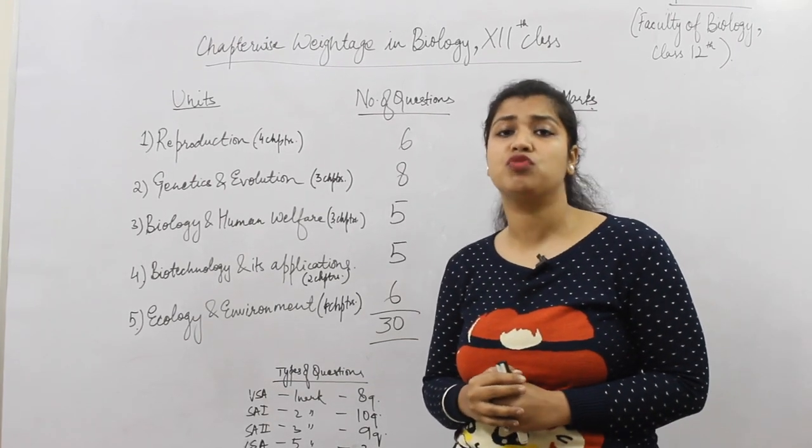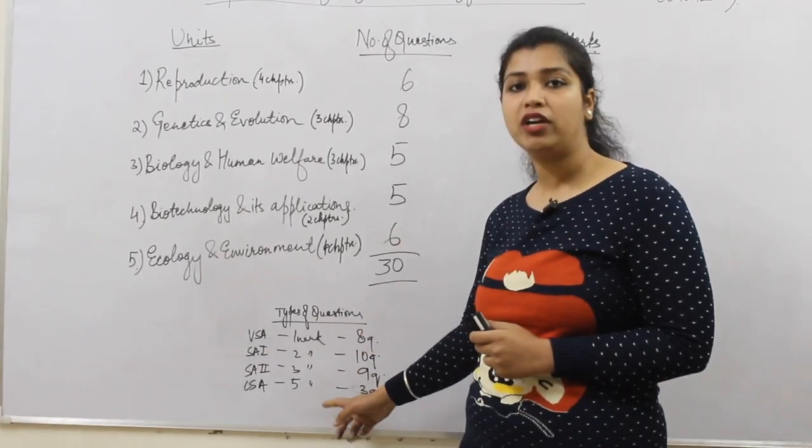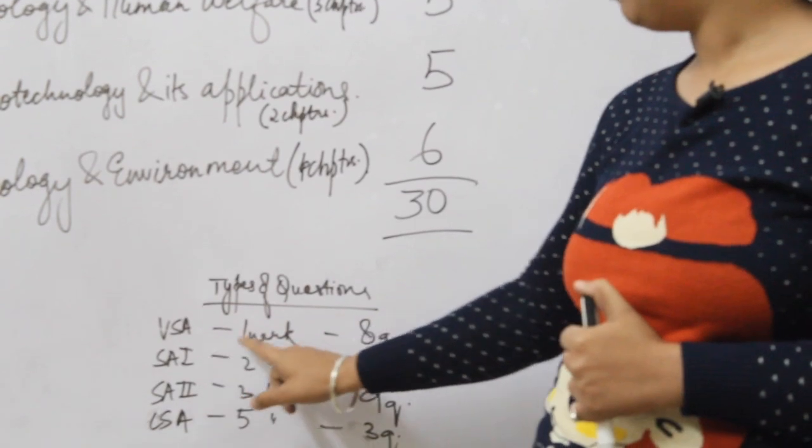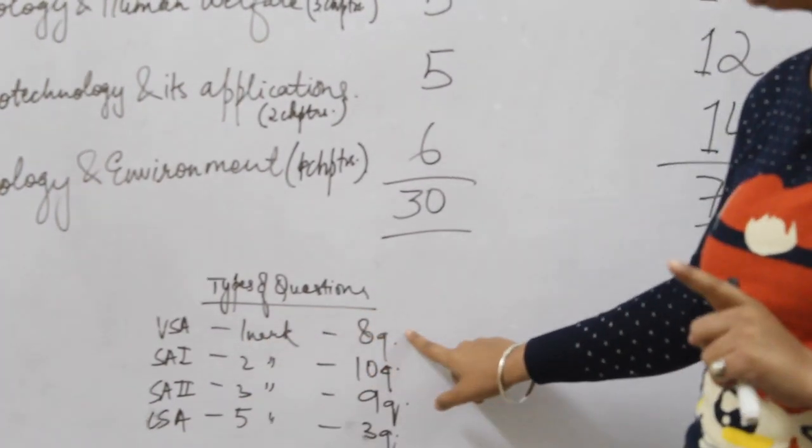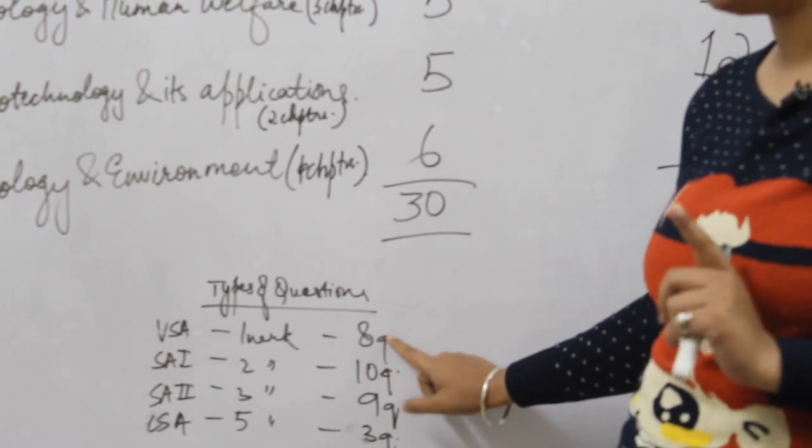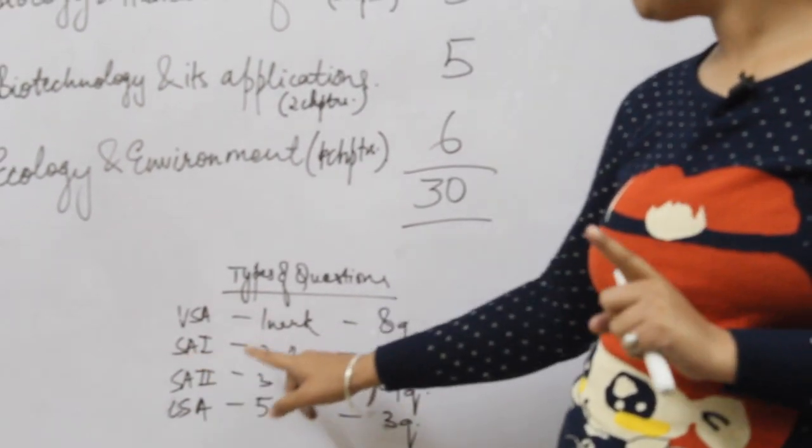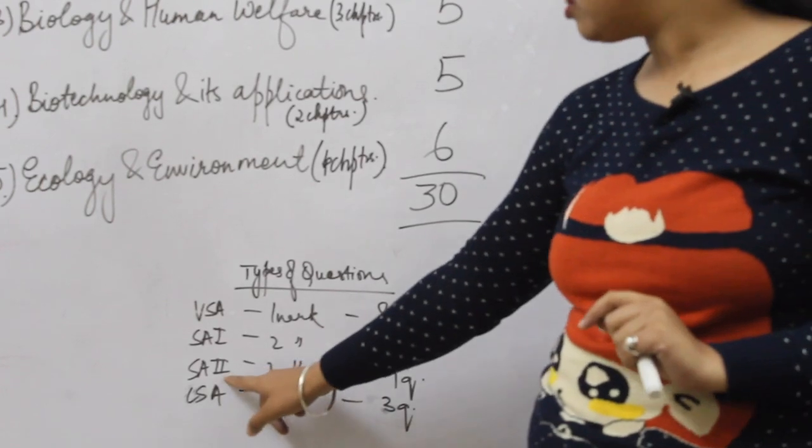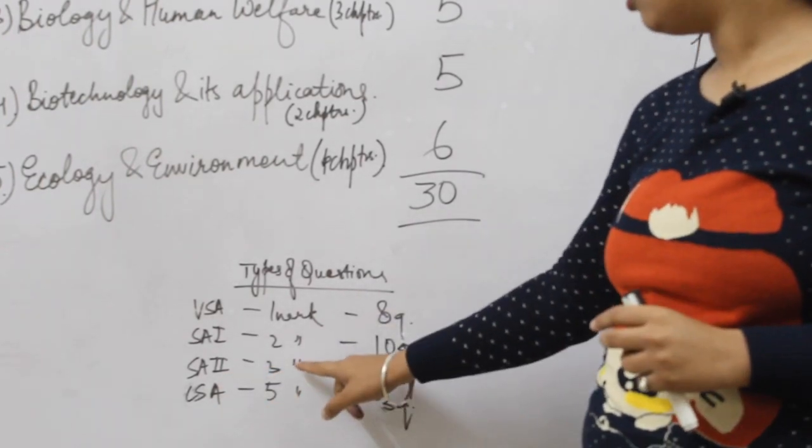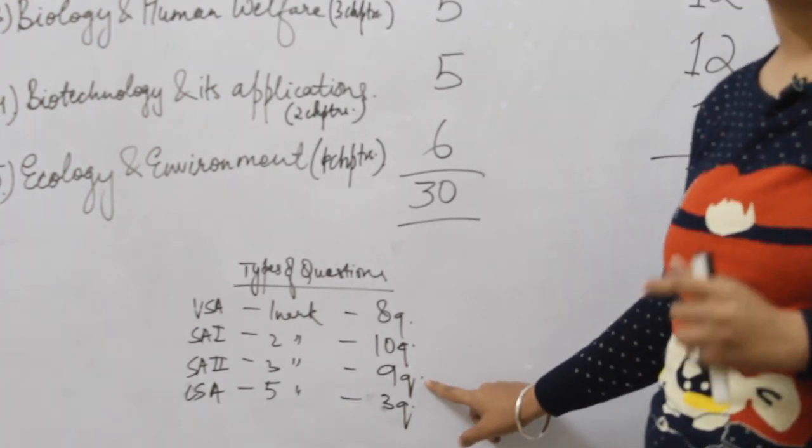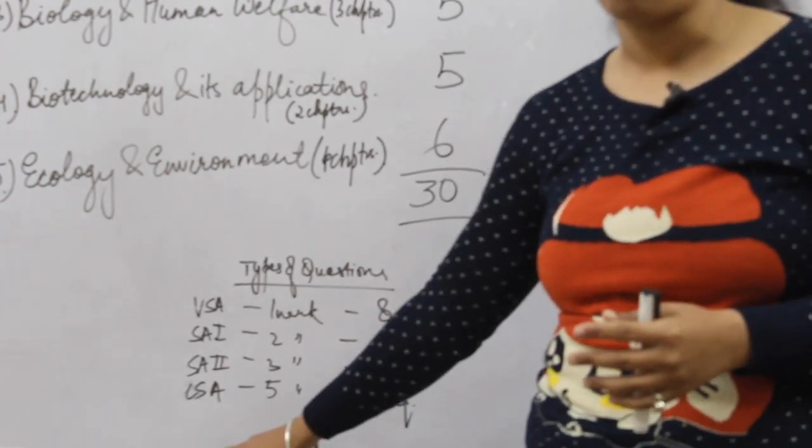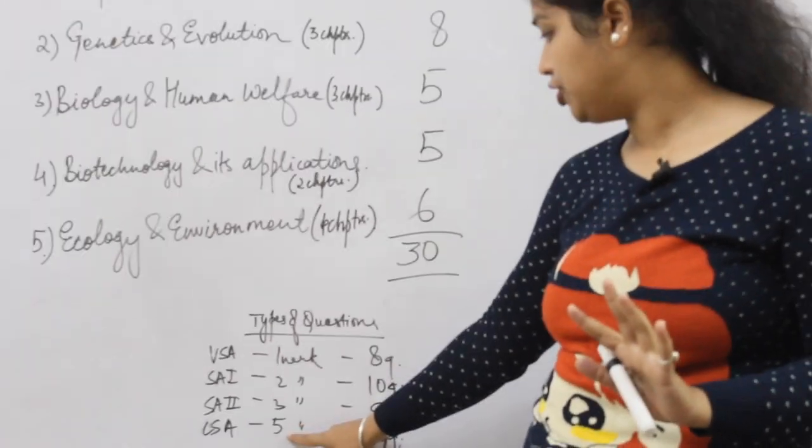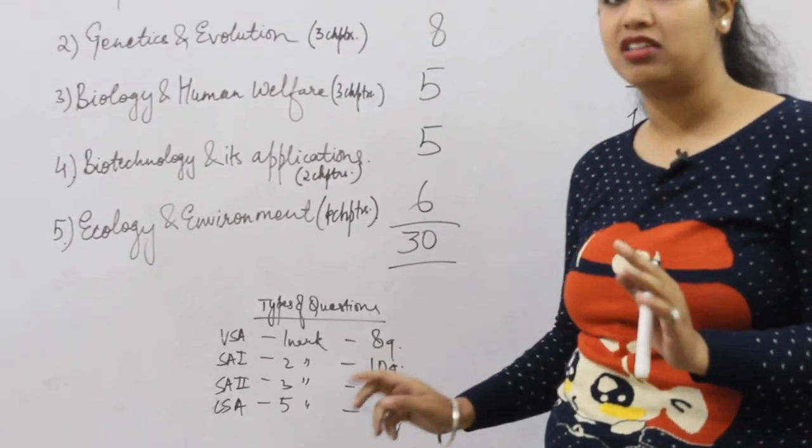If I talk about types of questions which will be asked in the paper, there are basically four types. Very short answer questions of one mark each, eight questions in total. Short answer type one, two marks each, ten questions. Short answer type two, three marks each, nine questions. And long answer type questions, five marks each, three questions in total.